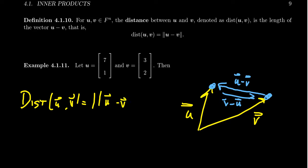That's what we just defined a moment ago. And so as you compute the difference vector, you're going to get 7 minus 3, which is 4, and then 1 minus 2, which is negative 1.